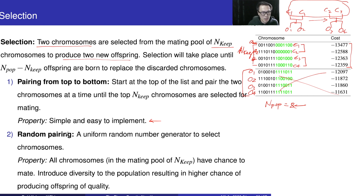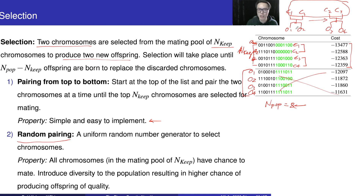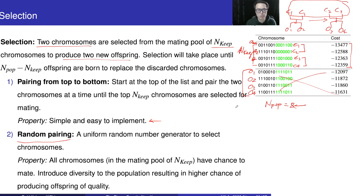The next one is random pairing. According to the name, we are going to randomly pick some of the chromosomes. For example, I randomly pick C1 and C3 to generate offspring. When we require more pairs, I randomly pick again — say C2 and C3 — to generate the next pair of offspring. Each chromosome here has an equal chance to be selected as a parent. So we can introduce diversity to the population, and everyone has a chance to reproduce.